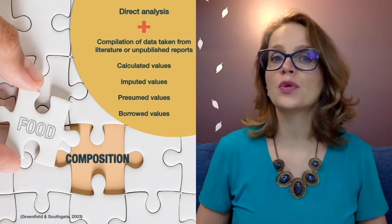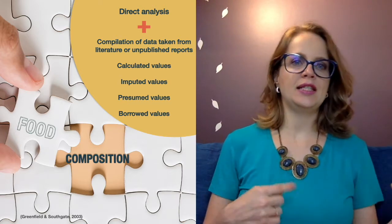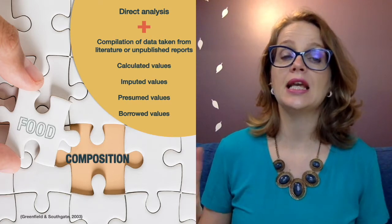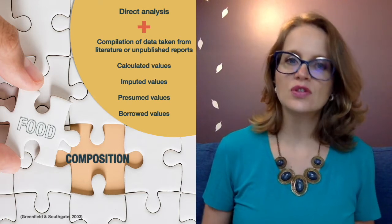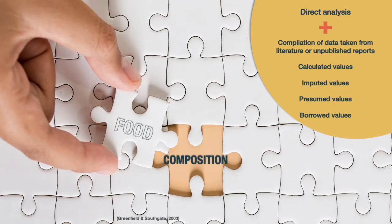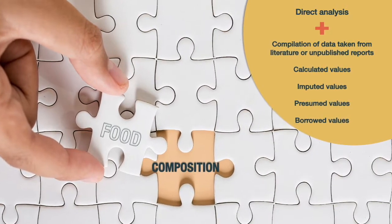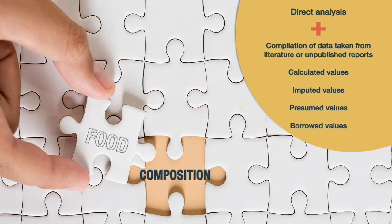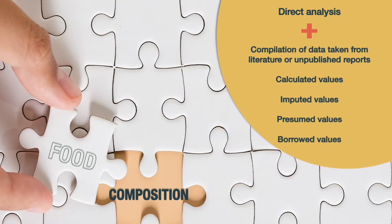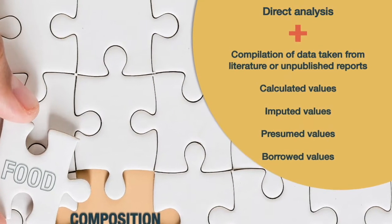Food composition databases are usually created using different types of data, including direct analysis — data generated using the criteria previously mentioned for the ideal food composition table, where values are generated specifically for inclusion in the database. We can also have data compiled from the scientific literature or unpublished reports from laboratories, which are usually of sound analytical quality. The compiler needs to scrutinize this data, and those considered good quality can be used in the compilation.